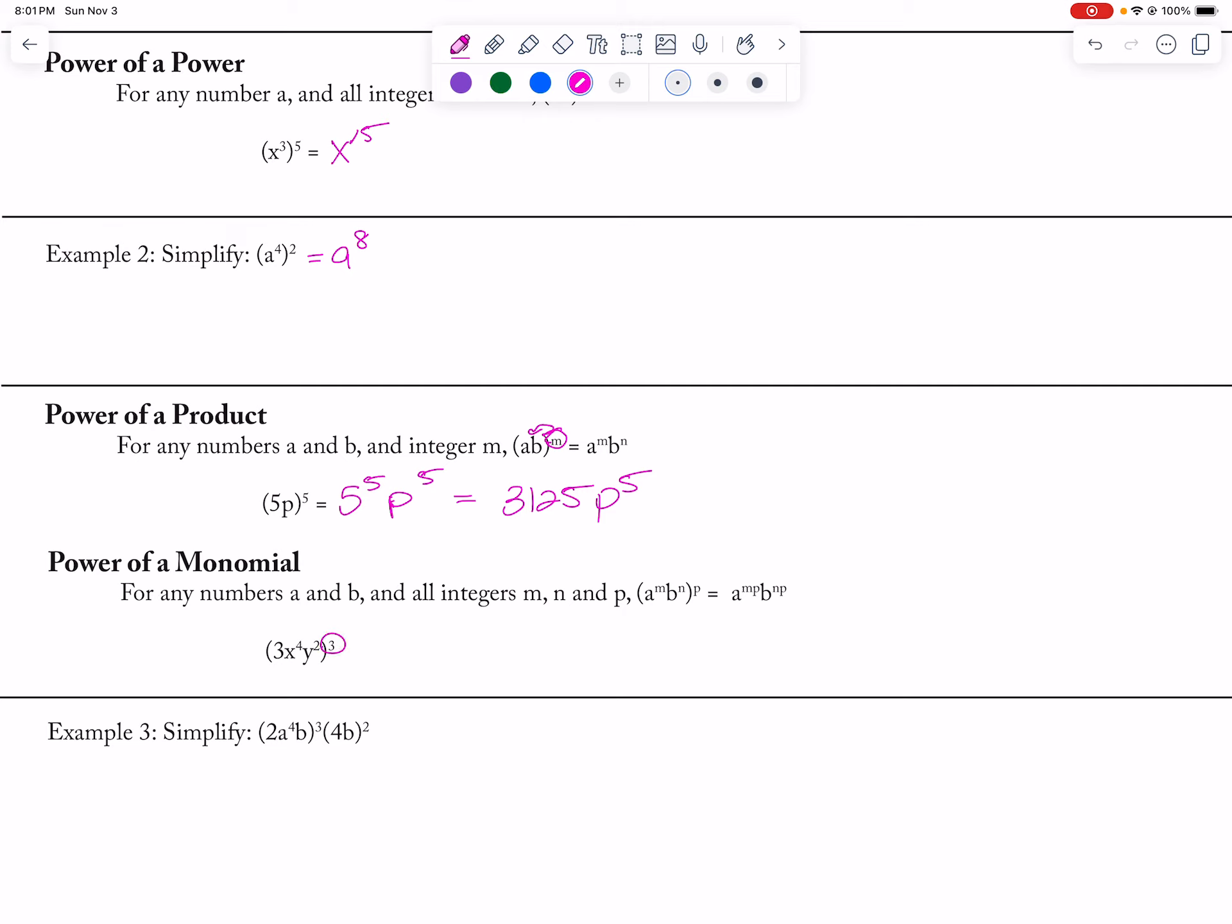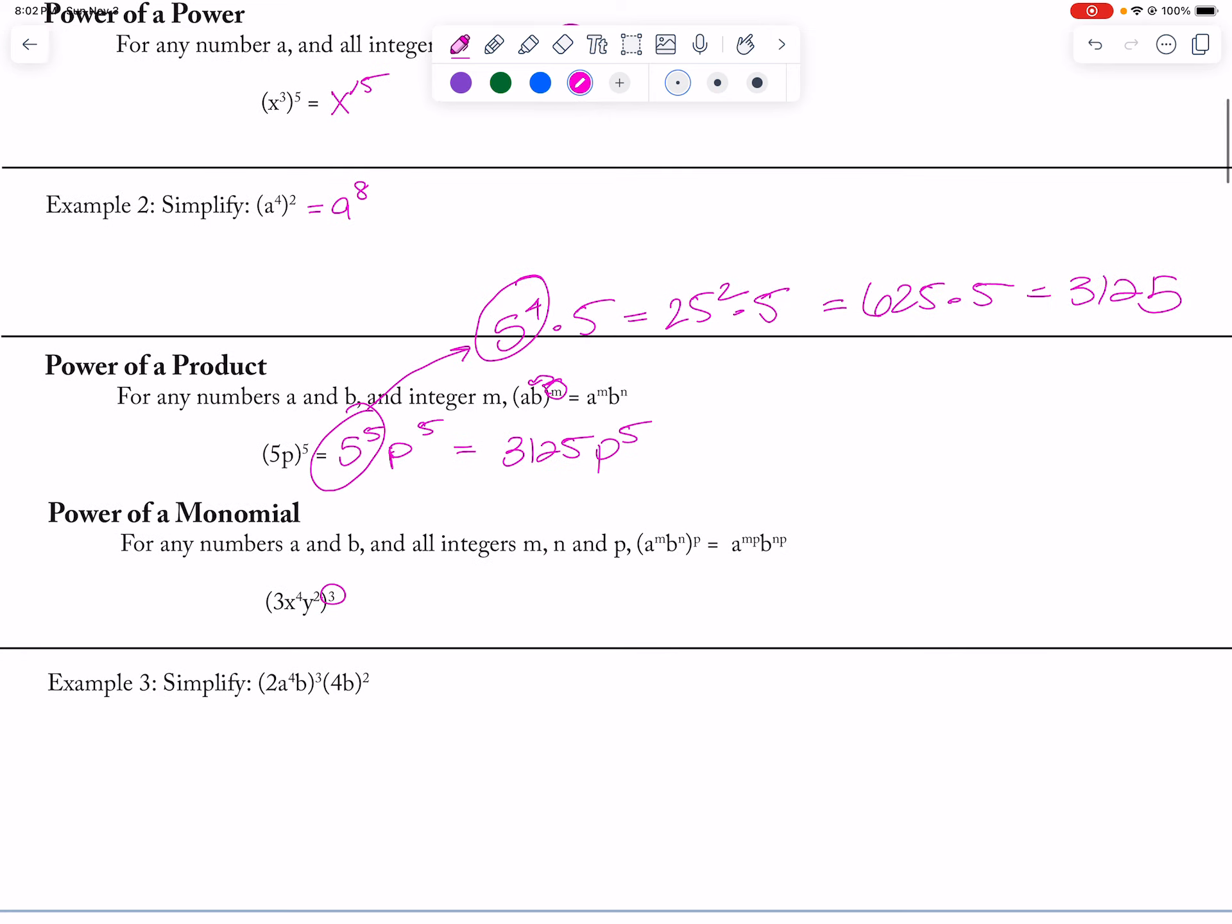If you want to know how I do that fast, for the 5th power I actually use my rules of exponents. I would do 5 to the 4th times 5, and 5 to the 4th is the same thing as 25 squared times 5, which is 625 times 5, so it's really easy for me to get 3125 from there. I do use rules of exponents to help me with my arithmetic.